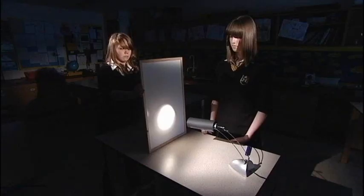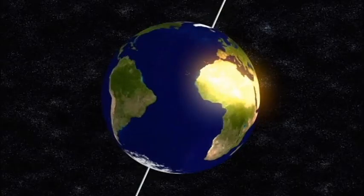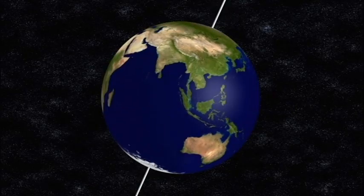Here's a simple demonstration that can help show how the intensity of light varies with the angle of inclination. This is the reason why it's hotter near the equator and colder near the poles.